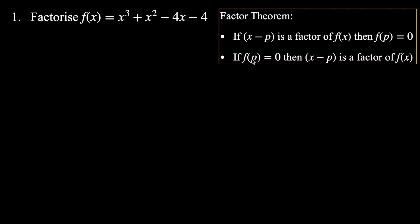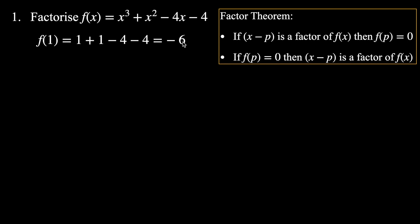We need to find a value of x that makes the function equal 0, and we do this by trial and error. A good place to start is x = 1. Plugging in 1: f(1) = 1³ + 1² − 4(1) − 4 = 1 + 1 − 4 − 4 = −6. That's not 0, so we need to keep looking.